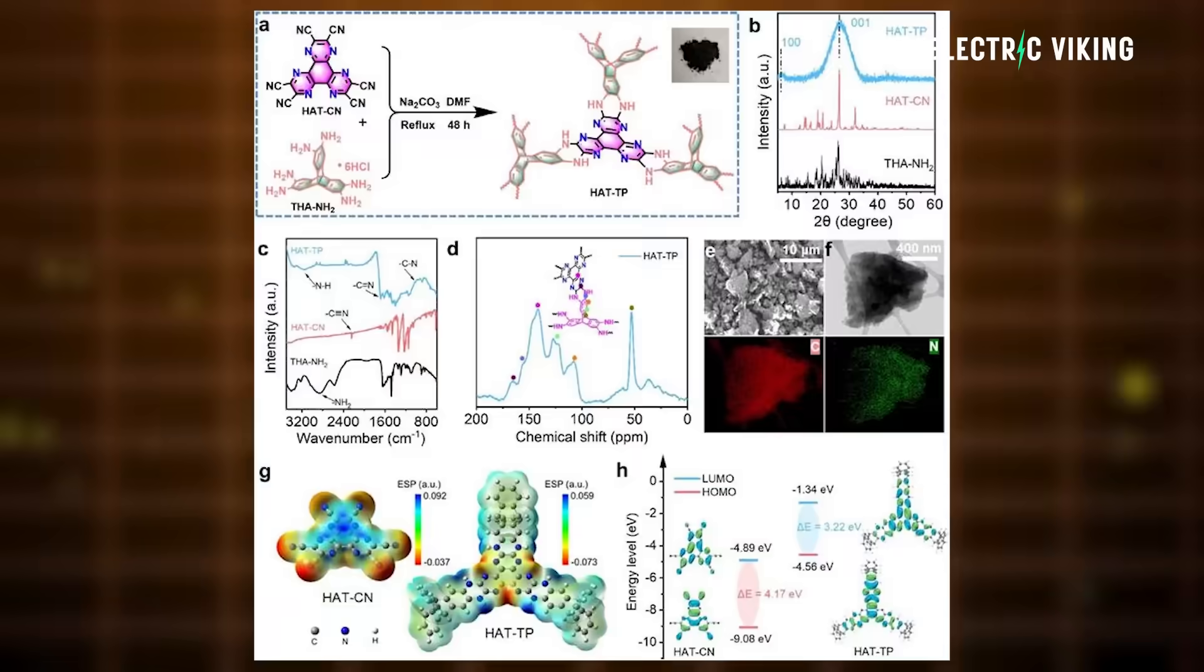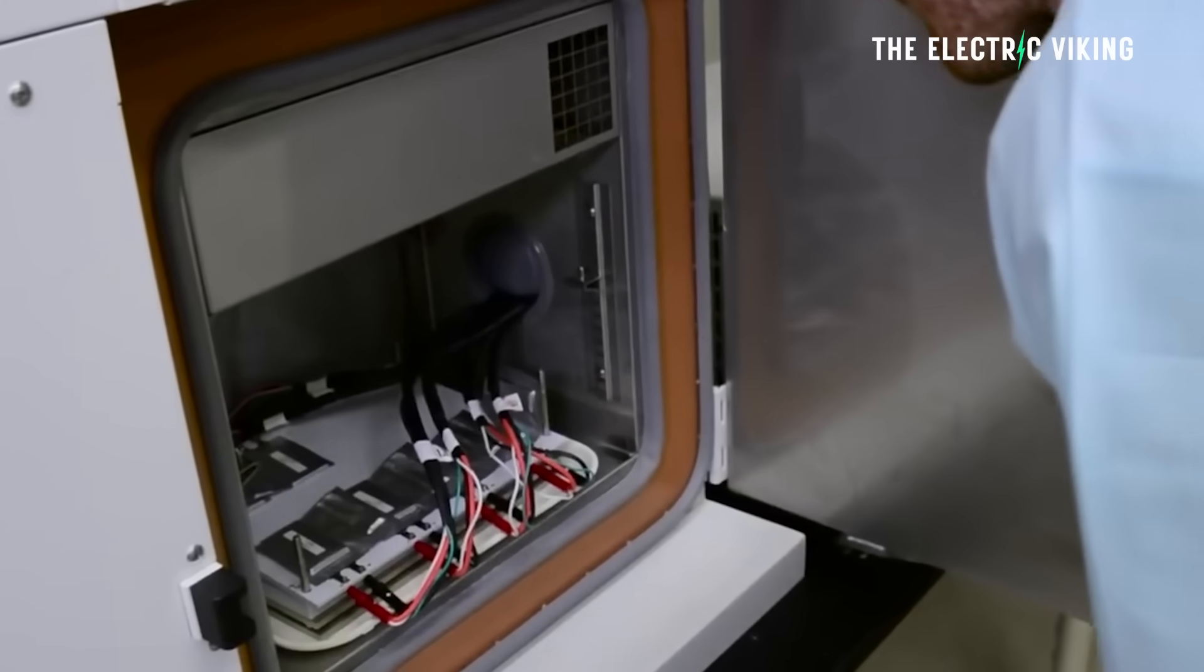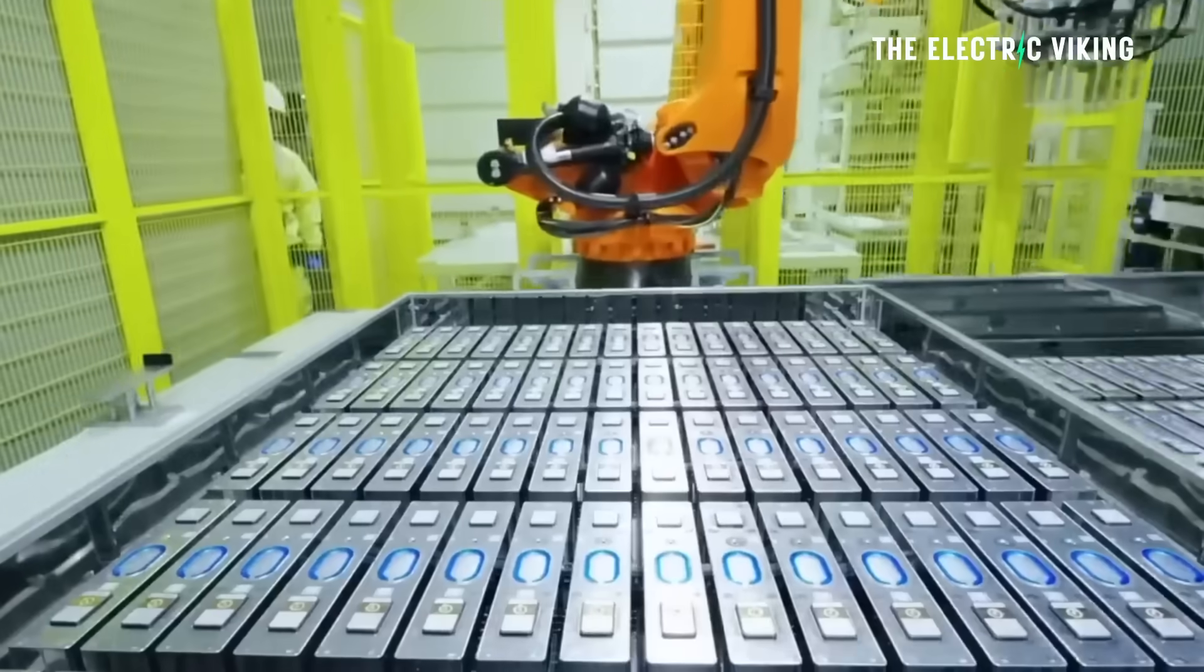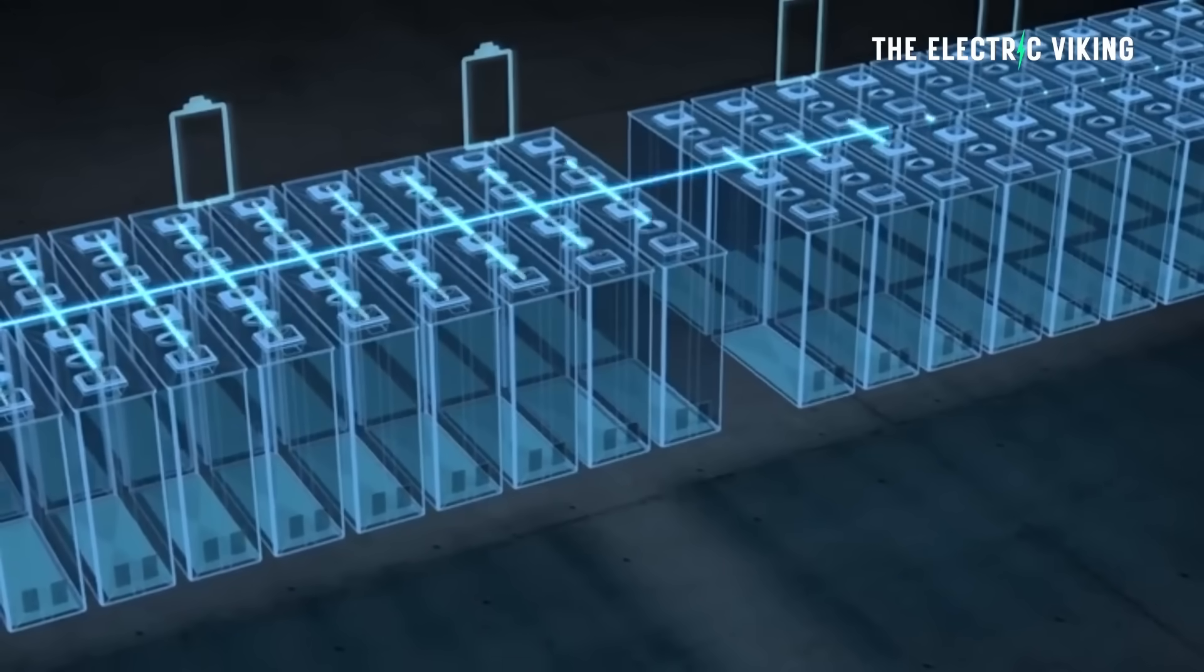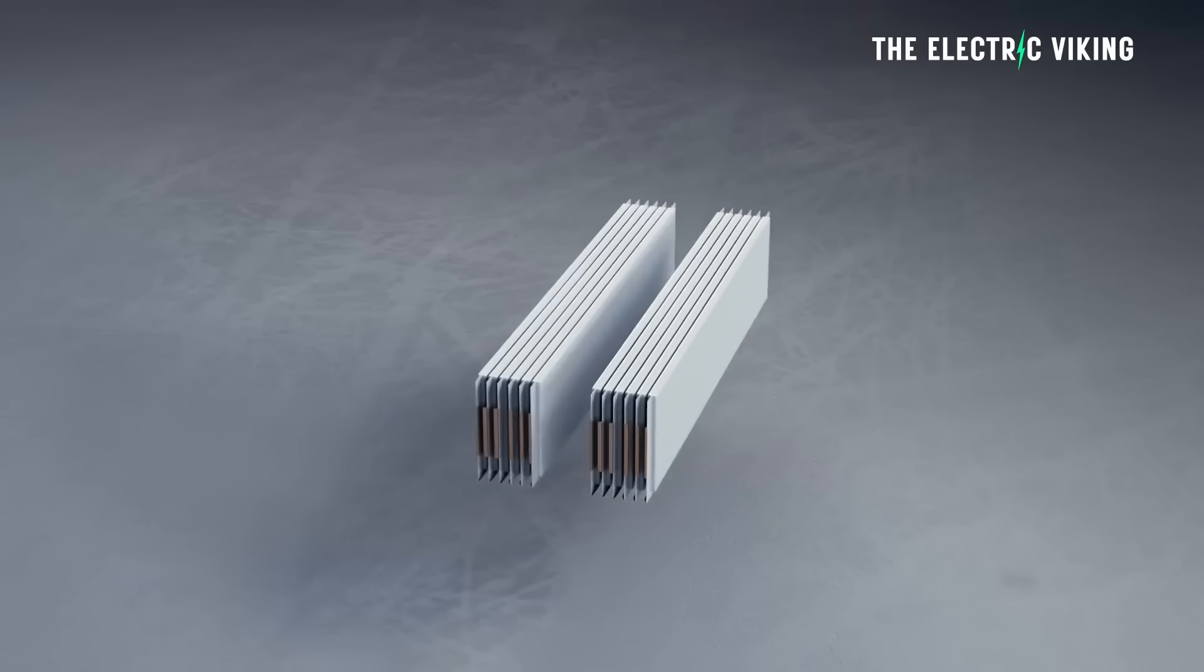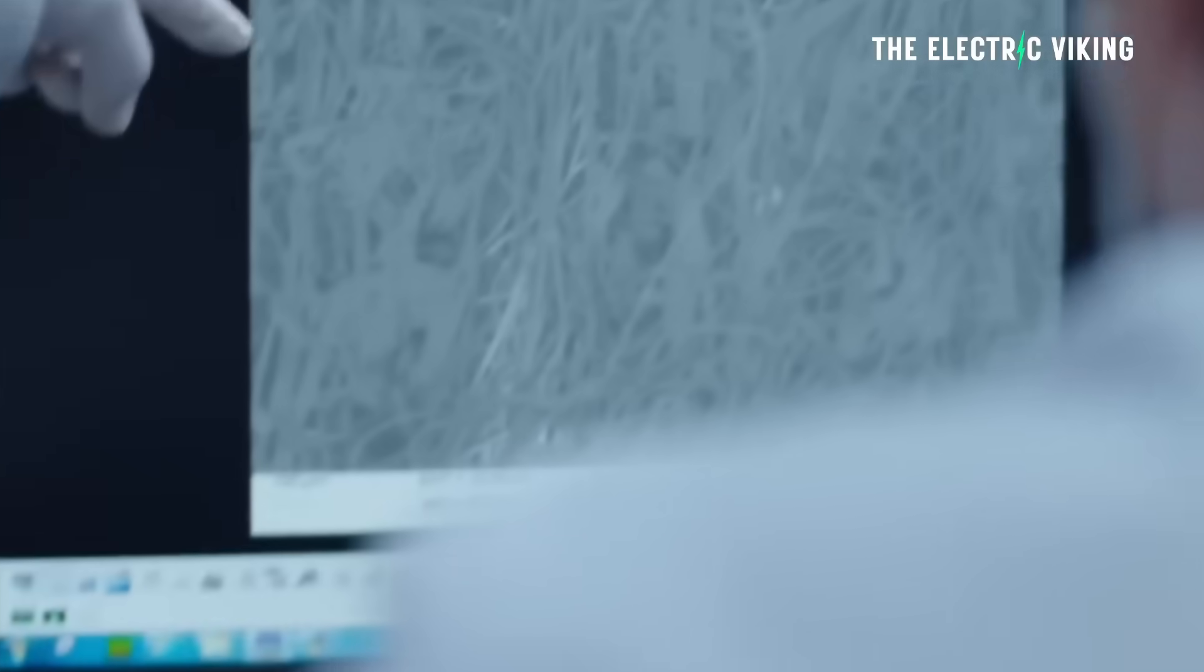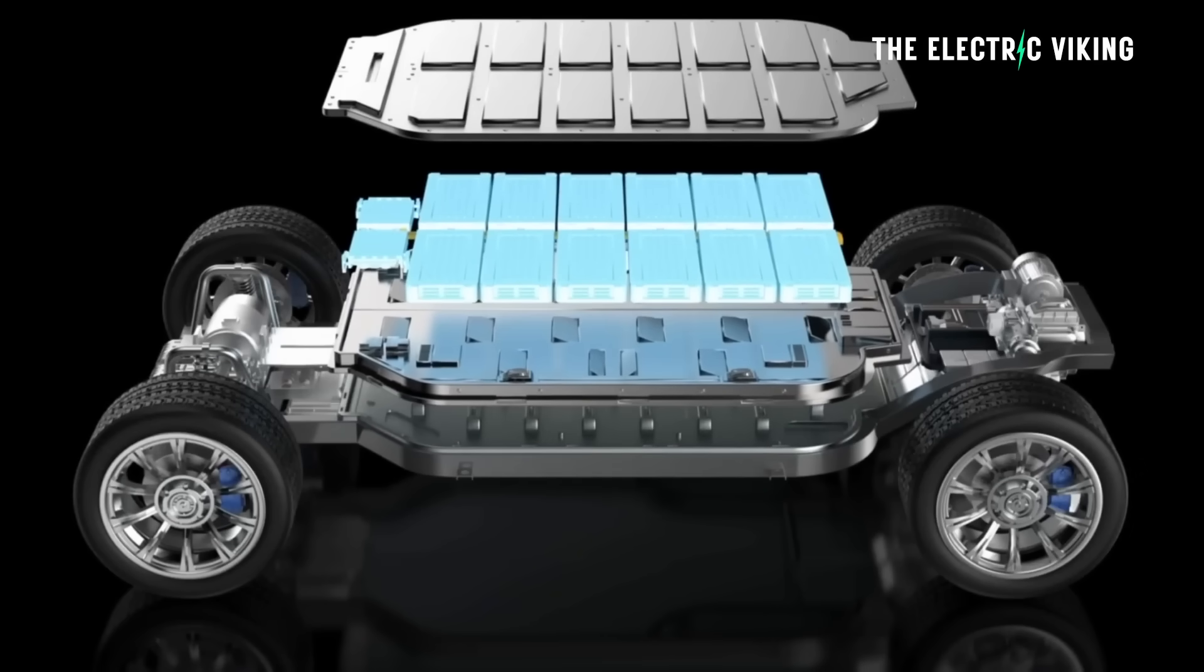And here's the thing. Organic batteries have long been considered the holy grail of sustainable energy storage because they're lightweight, recyclable, free from toxic metals, and they are actually really good except for one problem. They've always fallen short in terms of power and stability. Energy density hasn't been good enough. That's been the biggest problem with these organic batteries.